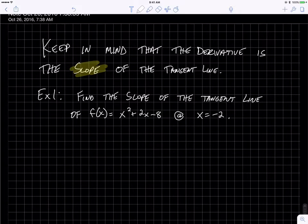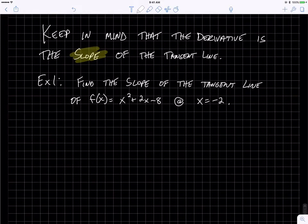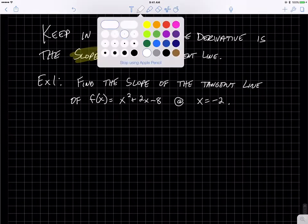We're going to look at writing the equation of the tangent line to a graph. Before we do that, I want to remind you about how we find the slope of the tangent line. If we're going to write the equation, then we're going to need the slope. So here's an example of that.